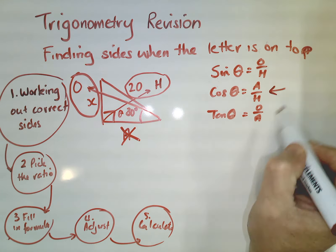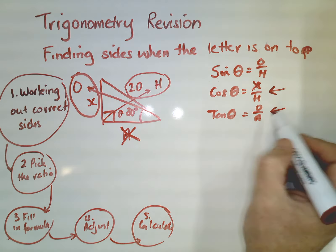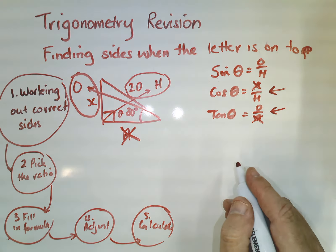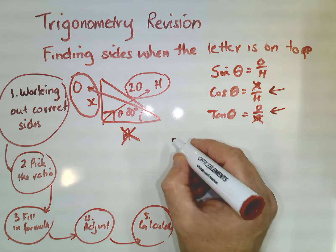And that makes it pretty easy for me to pick this ratio because this one has the adjacent in it, so I'm definitely not going to be using that one. And this one also has the adjacent on the bottom, so I'm not going to be able to use that one. So the ratio that I've got to use in this particular question is of course sine.